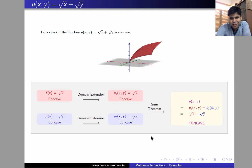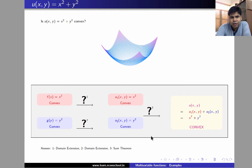So now consider as an exercise the function u(x,y) equal to x square plus y square and show that it is a convex function. The idea behind the proof will be exactly the same that we used to identify the concavity of root x plus root y.